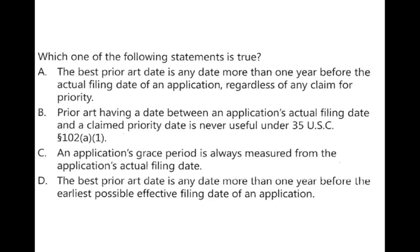Let's check if you guys are tracking. Which of the following statements is true? Thinking as the examiner: A) The best prior art date is any date more than one year before the actual filing date of the application, regardless of any claim for priority? Or B) Prior art having a date between an application's actual filing date and a claimed priority date is never useful? Remember what the priority date is — it's what you may be claiming, which may not be the actual filing date because you may have filed a provisional first.